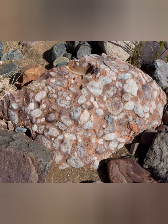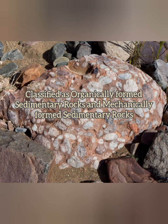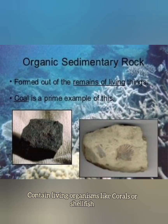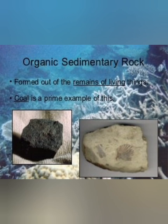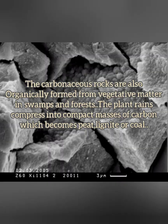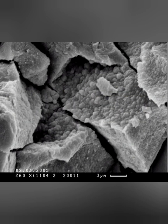Sedimentary rocks help us understand our geological past and are classified according to their age. They can be classified as organically formed and mechanically formed sedimentary rocks. Organically formed sedimentary rocks contain remains of living organisms such as corals or shellfish, whose fleshy parts have decomposed leaving behind only the hard shells. The most common are calcareous rocks including limestone and chalk. Carbonaceous sedimentary rocks are organically formed from vegetative matter in swamps and forests, containing compact carbon like peat, lignite, or coal.